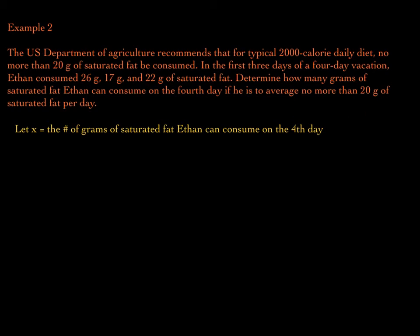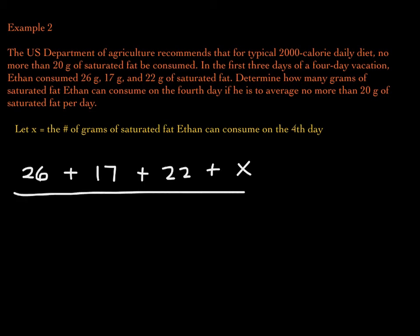This is how I'm going to set up my inequality: 26 plus 17 plus 22 plus X, divided by 4, is less than or equal to 20. If this had been a three-day vacation, we'd divide by 3; a five-day vacation, divide by 5 — the number of values you're adding is what you divide by. The average must be less than or equal to 20 grams per day.